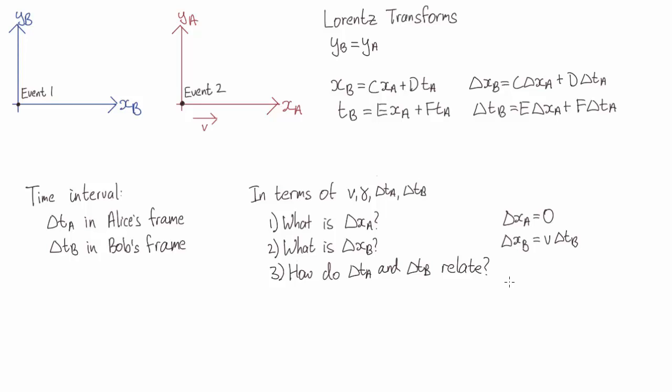Whereas from Alice's point of view, the ticks happened in the same location. And it was under this situation that we derived delta t_b equals gamma delta t_a.